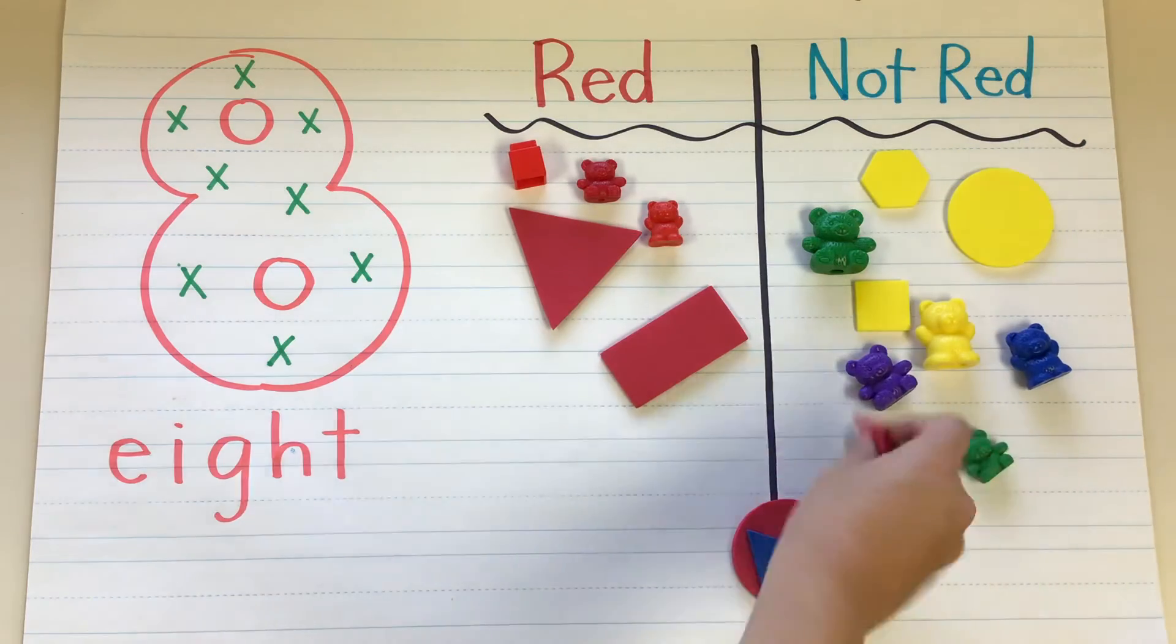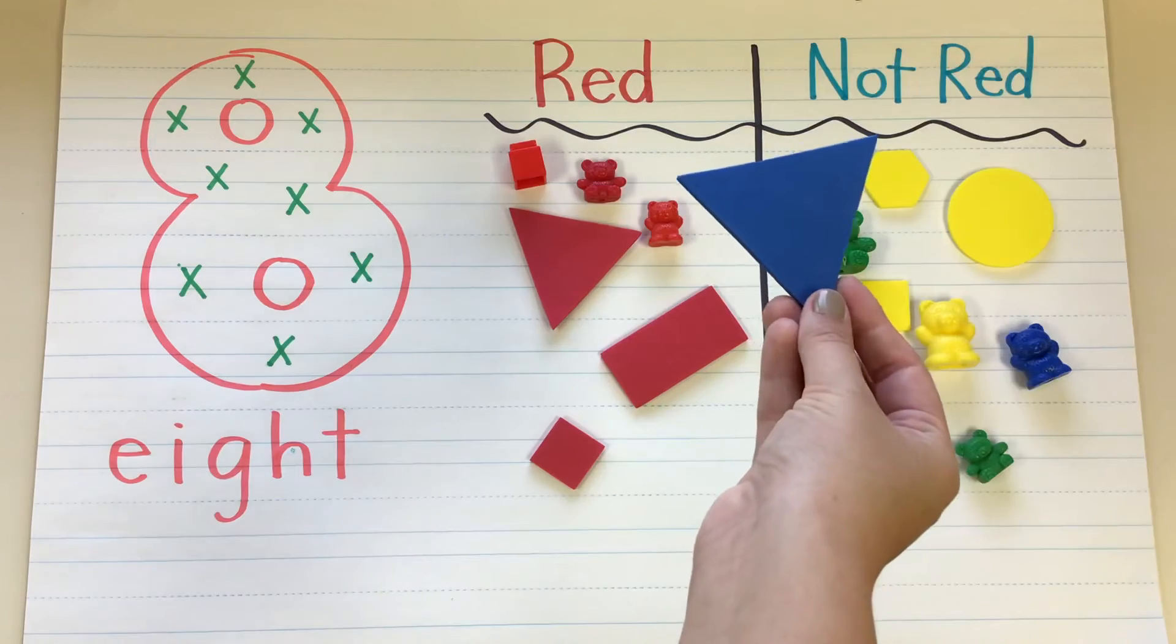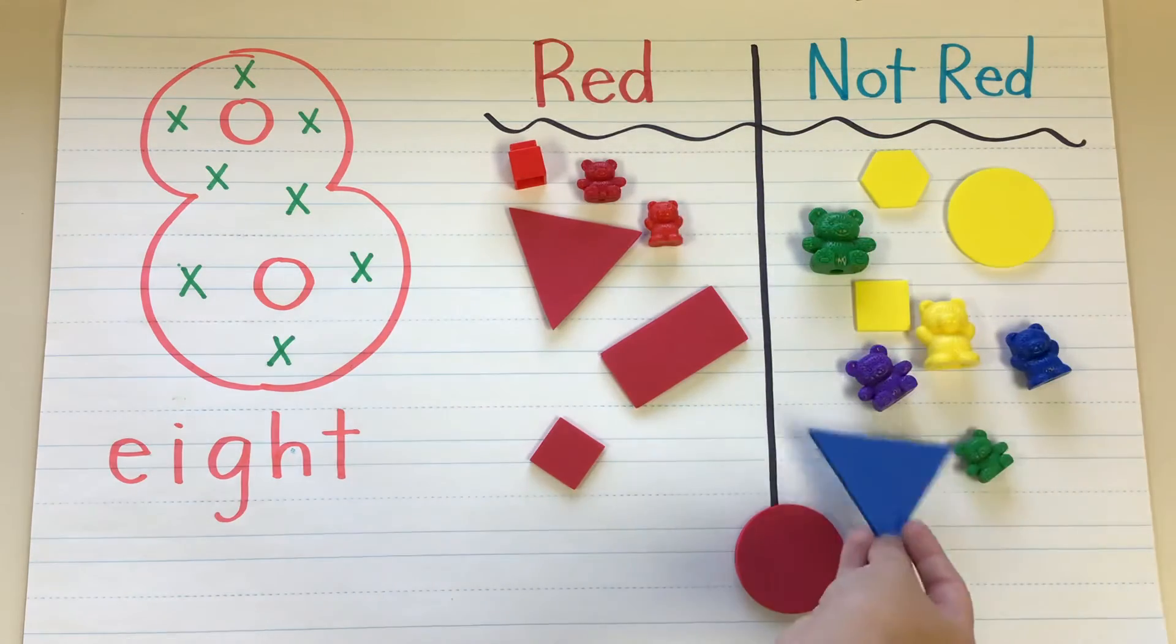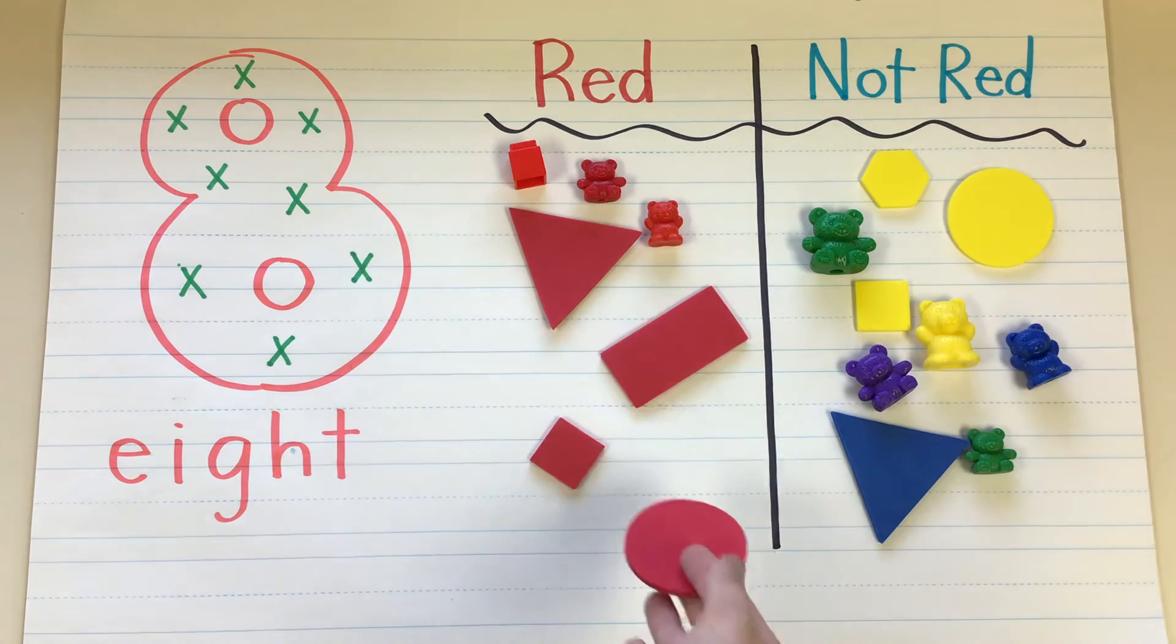Is this red or not red? Not red. Red. Is that the same? Nope. It's not red. So it's going over there. And last one. Is this red or not red? It's red.